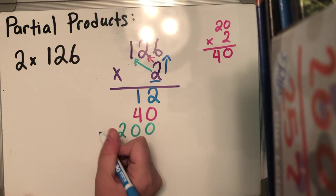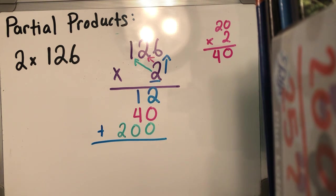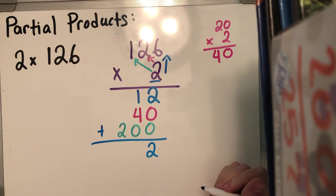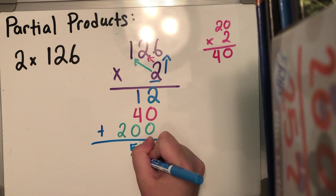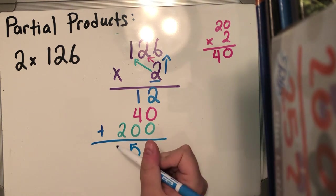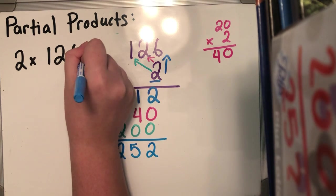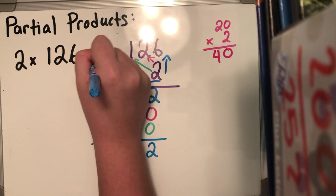Now I'm gonna add everybody together. So you can go ahead and add any zeros that you need to, but I'm just gonna add it straight across. So two plus zero plus zero is two. One plus four is five, plus zero is another five. And two plus zero plus zero is gonna give me two. So the product of two times 126 is 252.